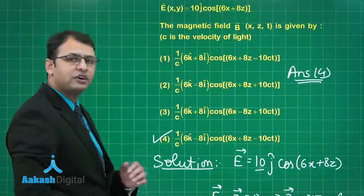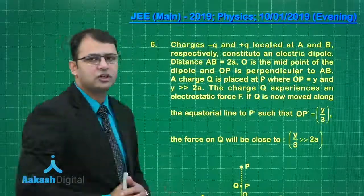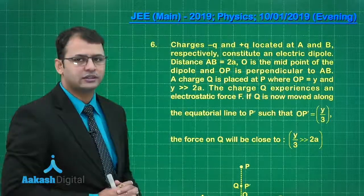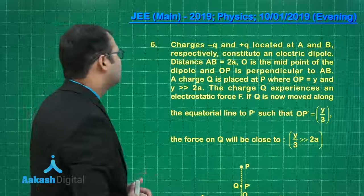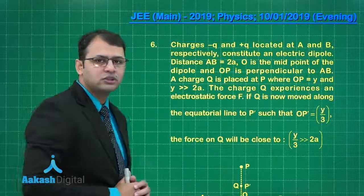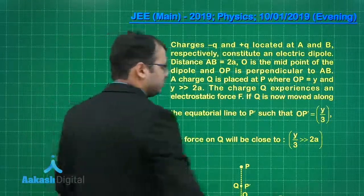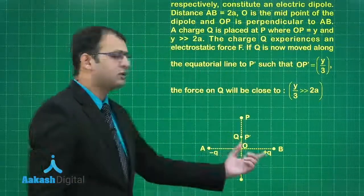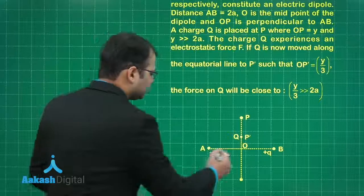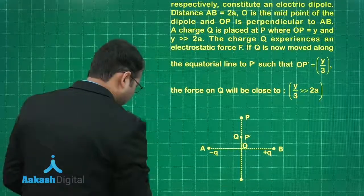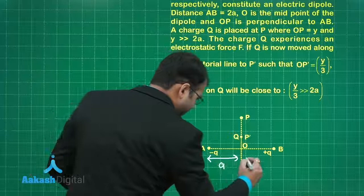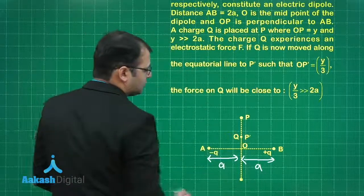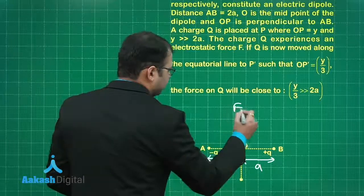Let's move ahead to our next question. This question belongs to electromagnetism, chapter electrostatics. There are two charges plus Q and minus Q at a distance of 2A as per the diagram. As per this diagram, minus Q and plus Q are separated by 2A distance. This would be A and this would be A.